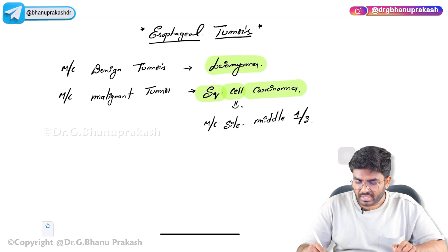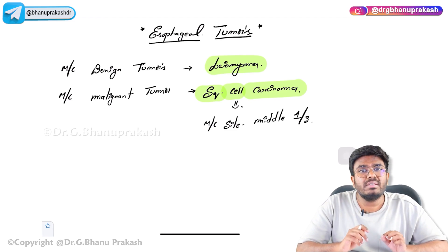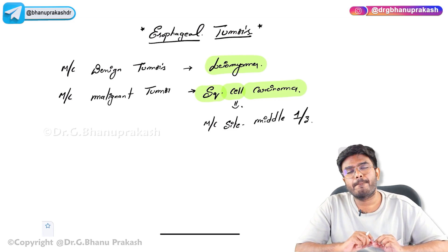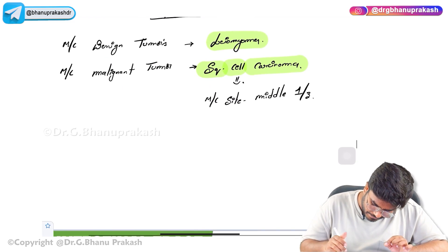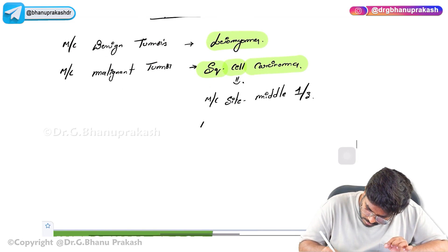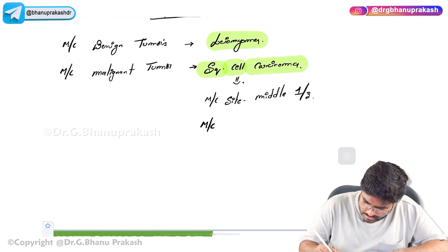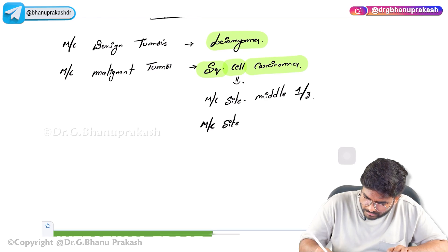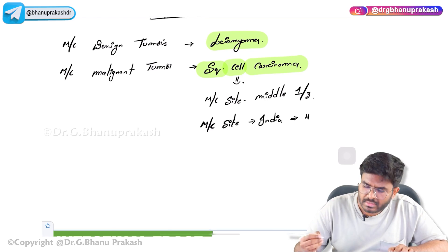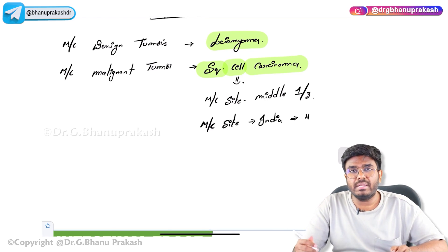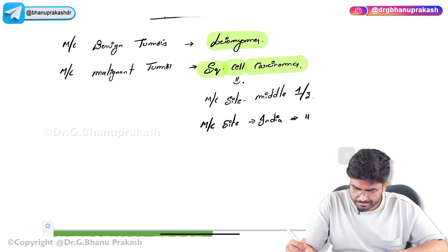If someone asks what is the most common site of esophageal cancer in India, the answer remains the same — it is the middle one-third of the esophagus.